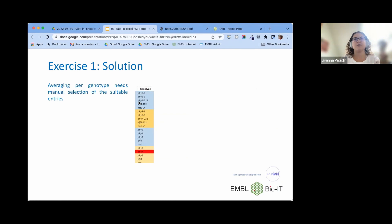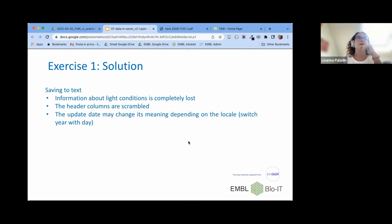Averaging per genotypes will need a manual selection of the suitable entries because they are not always referred to with the same code. This is F, phi A, and this is again phi A. Are these two things the same or not? We don't know. If we were to save these data to other formats like CSV or TSV, there's a lot of information that will be lost because the colors are going to be lost, but also the errors, the red row there, and the bold too.